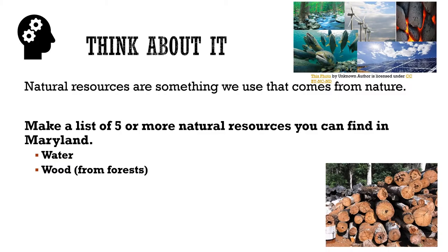Natural resources are something that we use that comes from nature. Sometimes we use natural resources that are considered raw — things that aren't processed, like water. But other times we change the natural resource to make it useful. For example, we may cut down trees to make lumber, then take that lumber to make houses or pencils. A pencil comes from a natural resource.